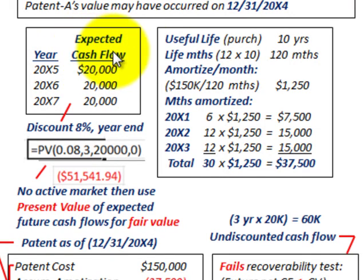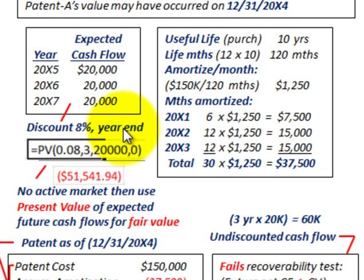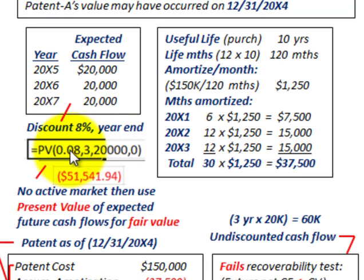We're given the expected future cash flows on this patent to test for impairment. From 20X5 to 20X7 — three years — we have $20,000 per year in cash flows. Since there's no active market, we use the present value of expected future cash flows to determine fair value. Using a discount rate of 8%, the present value of $20,000 per year for three years discounted back at year end is $51,541.